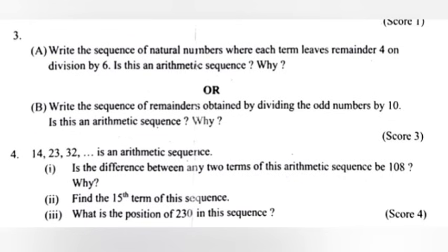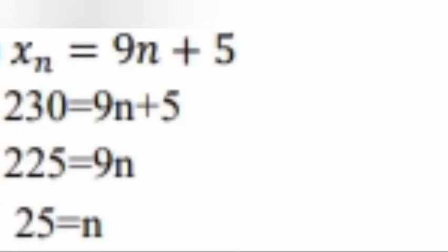Part 3: What is the position of 230 in this sequence? Answer: xₙ = 9n + 5. So 230 = 9n + 5, which gives 225 = 9n, therefore n = 25.